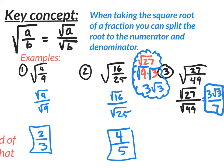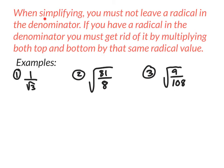Now, there is one little catch. When you're simplifying, if you ever end up with a radical in the denominator, you have to get rid of that radical in the denominator. When simplifying, you must not leave a radical in the denominator. If you have a radical in the denominator, you must get rid of it by multiplying both top and bottom by that same radical value. You see how there's a radical down here? I cannot leave that there. I need to get rid of the square root — I could have a number like 3 down there, but I don't want the square root of 3.